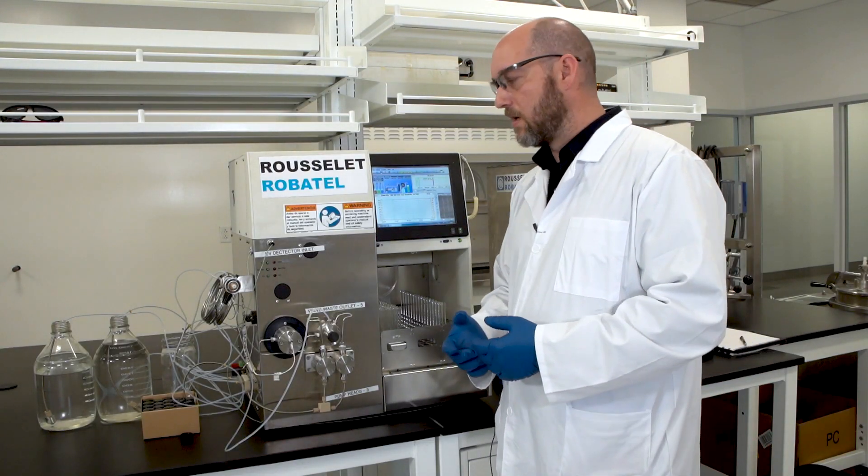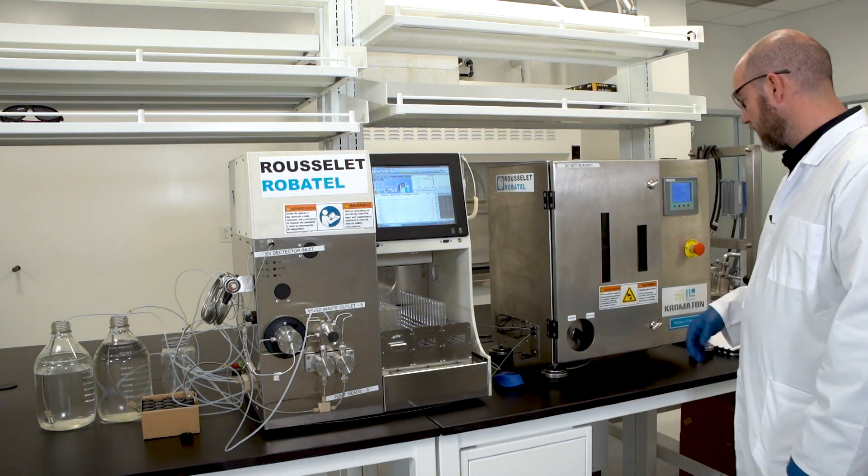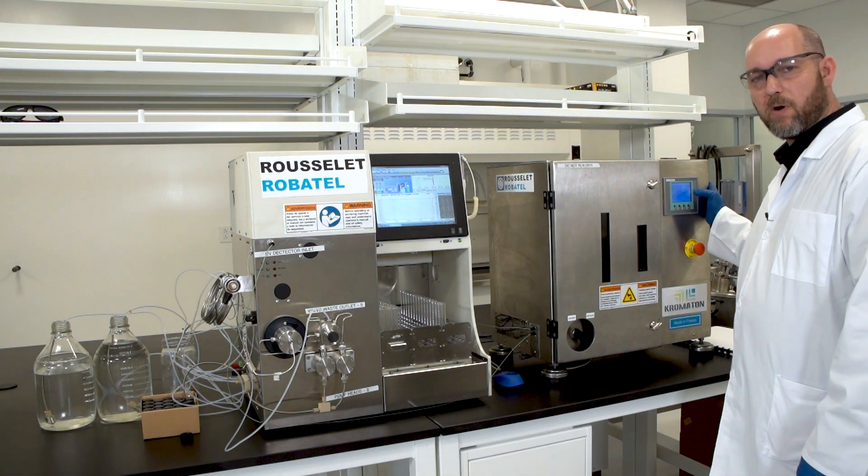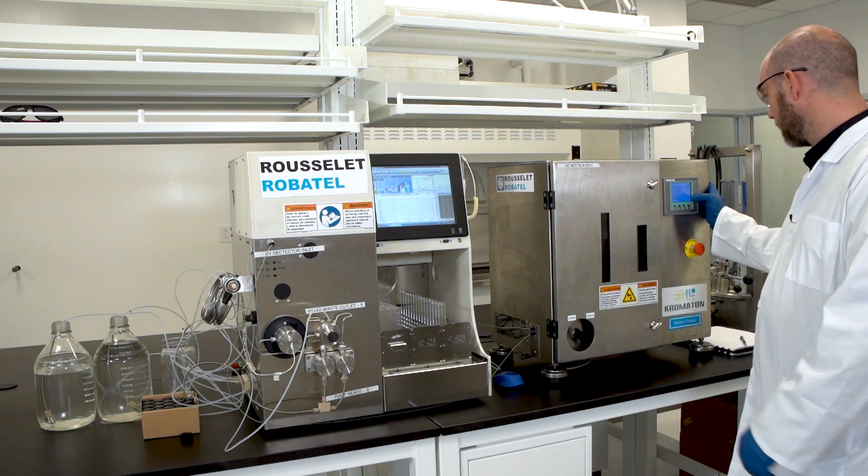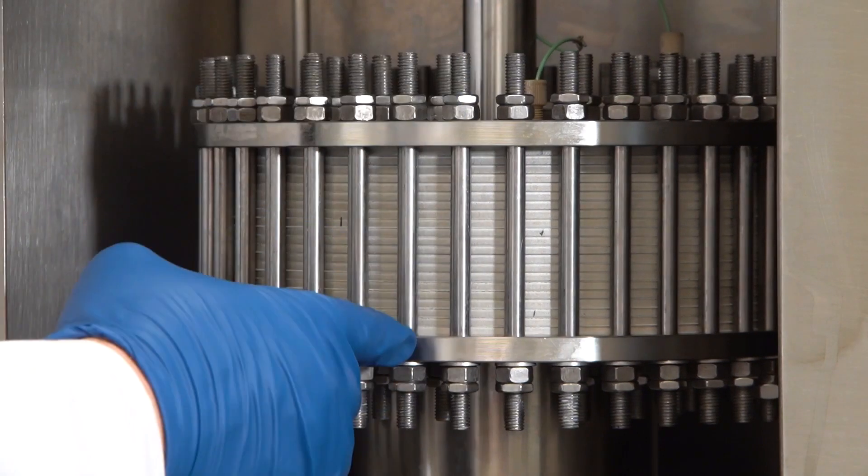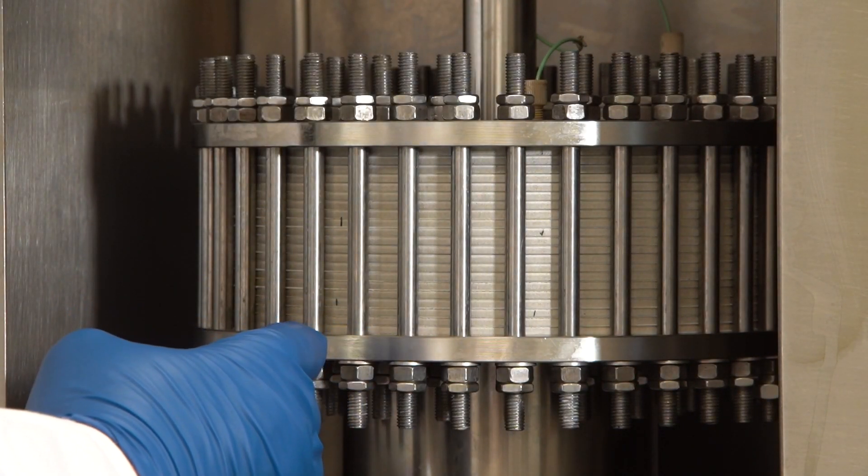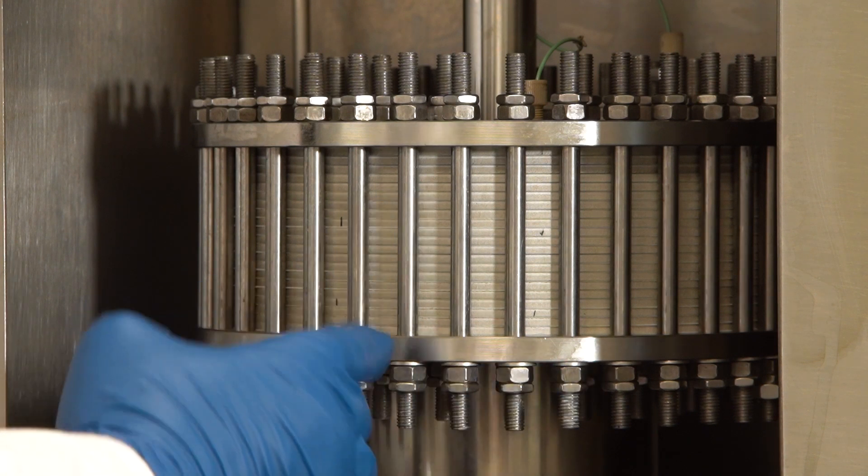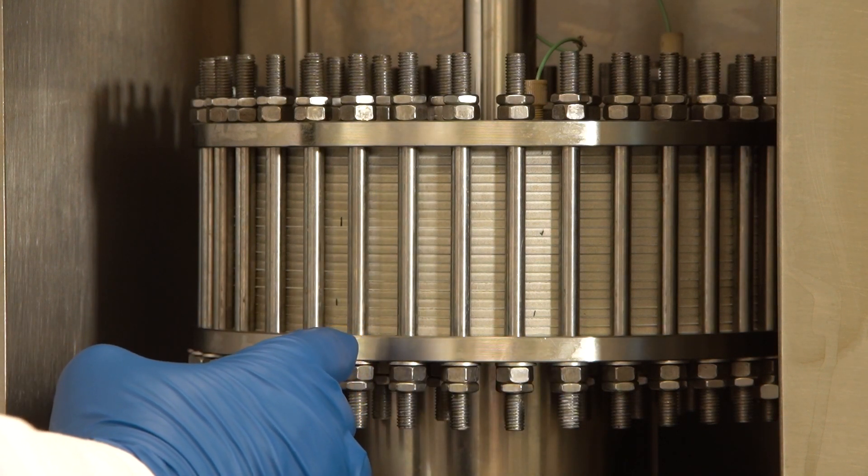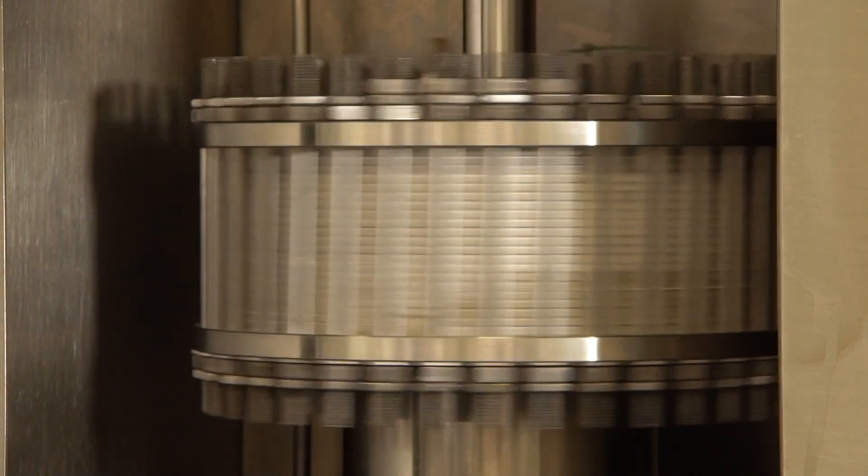After the injection happens, it's going to move through the pumps into the rotor. This is the centrifugal partition chromatograph rotor for a quick look. It has 840 doublets of cells inside, which essentially equates to 840 liquid-liquid separations in series with each other. It spins all the way up to a maximum of 1,500 RPM.